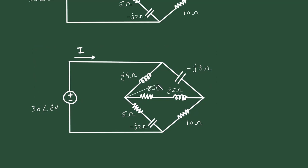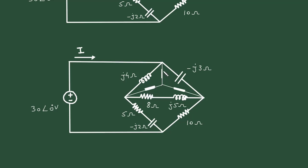Here it will look something like this. First, let's change this 8 ohm and this J5 ohm. Now we can easily draw the inner star connection. So it will look something like this. So this is ZA, this is ZB, and this is ZC.